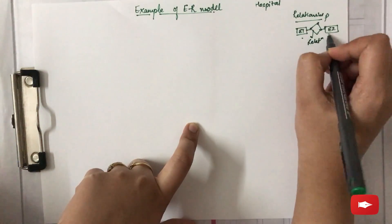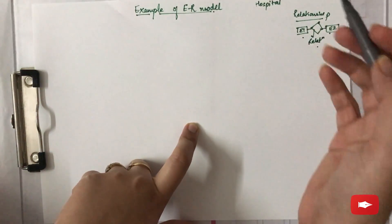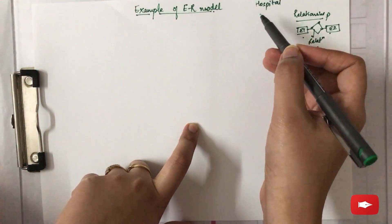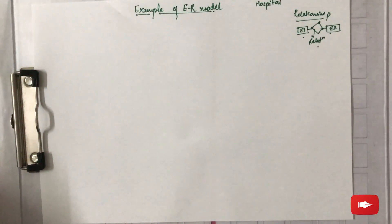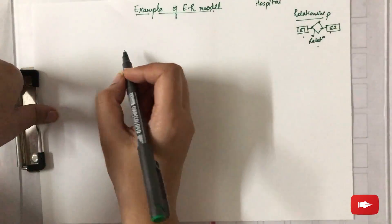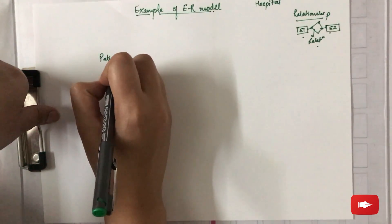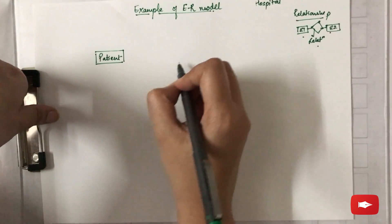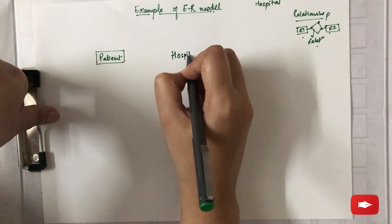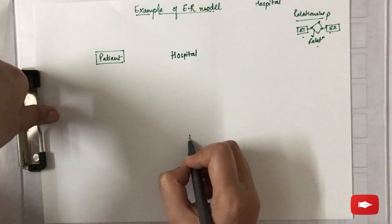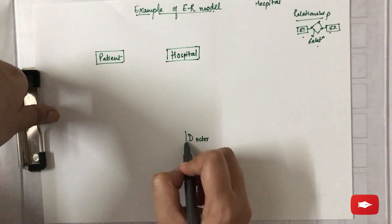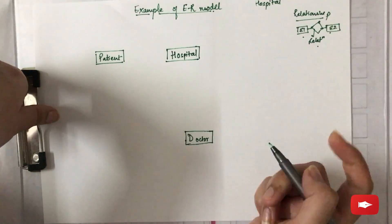Coming back to the example, we have to make an ER diagram for a hospital with a set of patients and medical doctors. We need to decide what entities to take. I am taking three entities: the first is patient, represented in a rectangular box; the second is hospital; and the third is doctor.